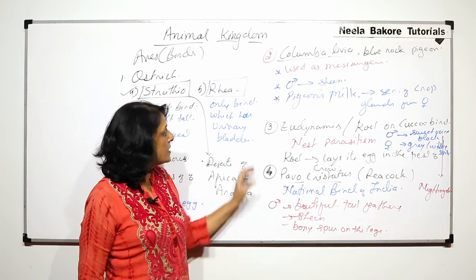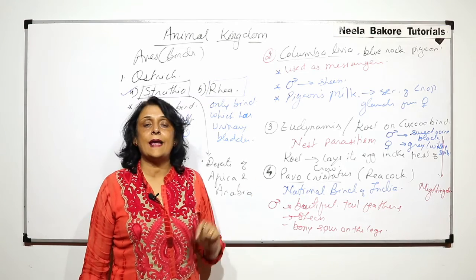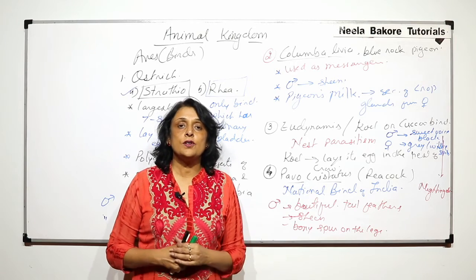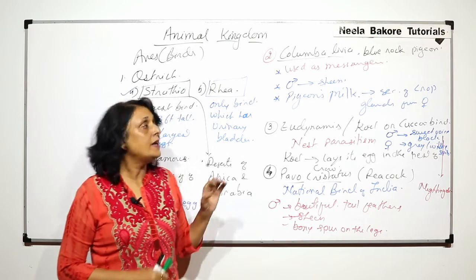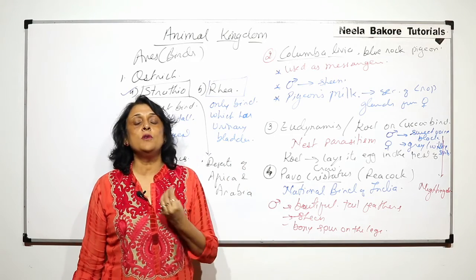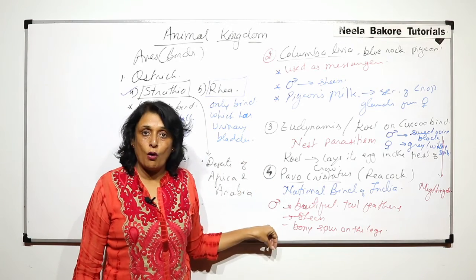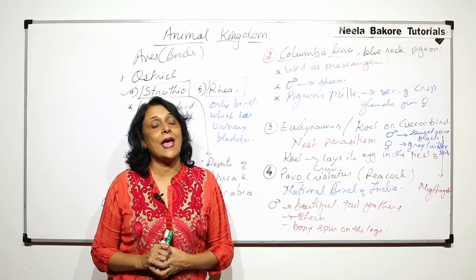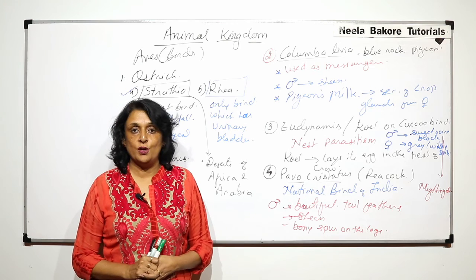So these are some important birds and some unique characteristic features of these birds. General characteristic features remain same because they all are in the same class, but every bird or every type of bird shows some unique features which are restricted only to that particular type of bird. Now, in the next part we will take up some more examples and also talk about some flightless birds.